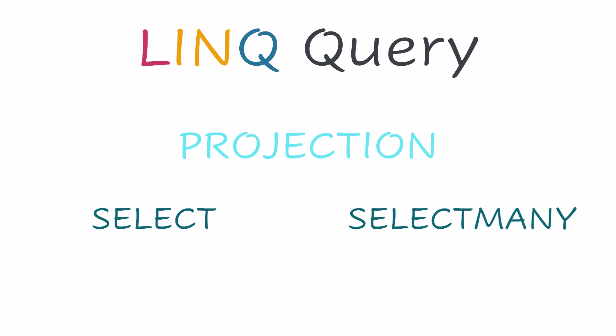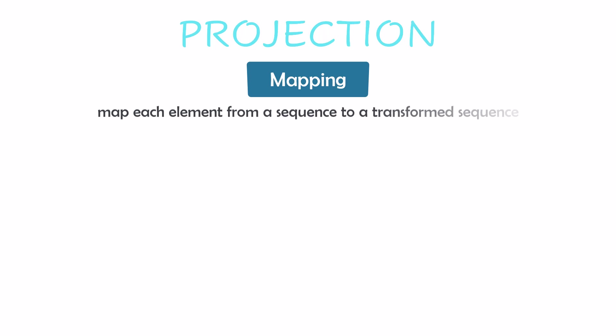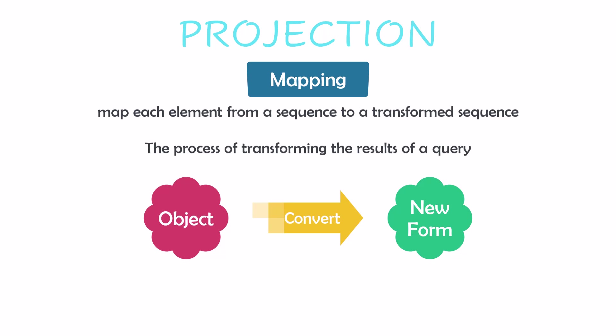Before starting to explain the select operator, let's understand what projection means. Projection is mapping — you map each element from a sequence to a transformed sequence. In other words, it's the process of transforming the results of a query. You have a query to filter the data from the source, and to get that filtered data you use a projection operator. Using projection, you convert an object into a new form which holds only the properties that will be subsequently used.